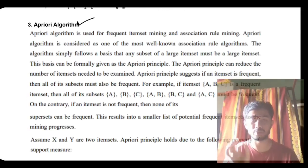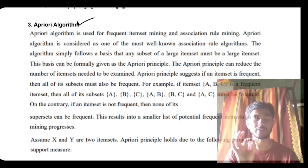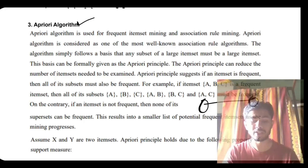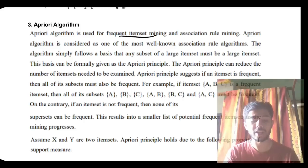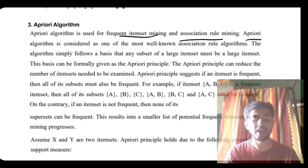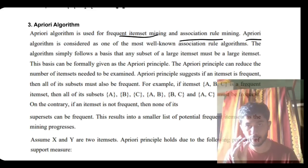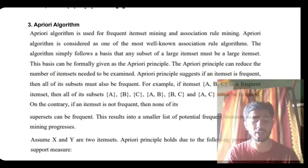The third super important question is about the A Priori algorithm — a numerical question may also be asked, so be prepared. The A Priori algorithm is used for calculating the association between two variables, specifically how frequently they occur together. It is a frequent item-set mining and association rule mining algorithm. It uses a large item dataset and considers subsets with the highest frequency of occurrence.